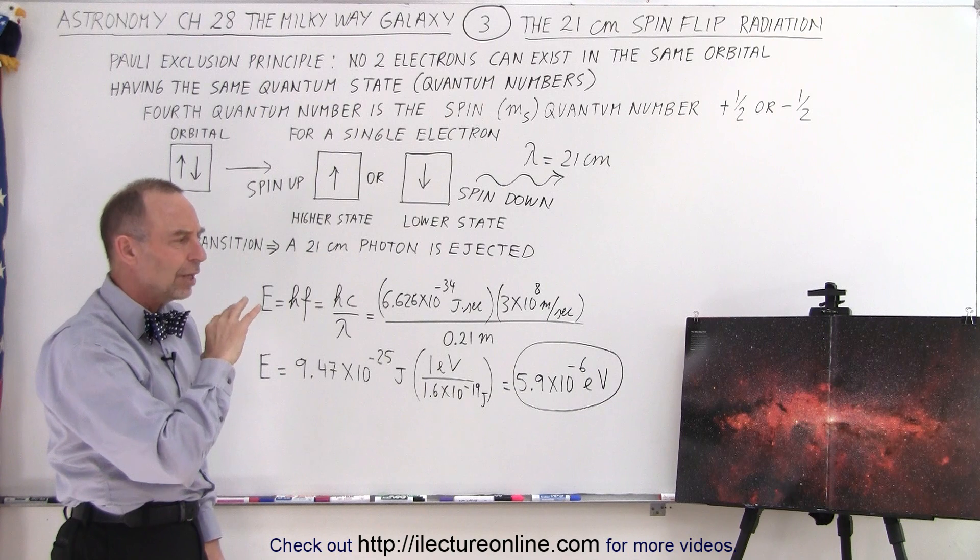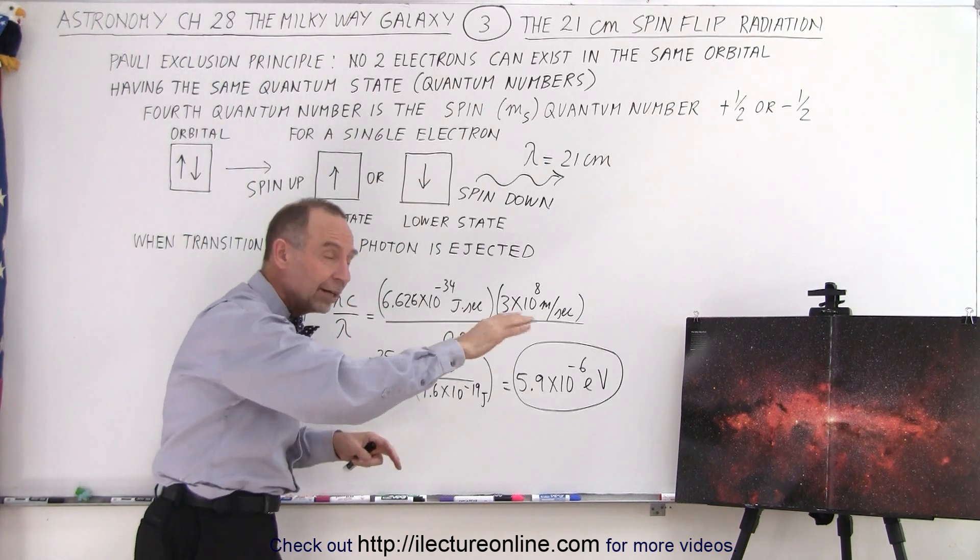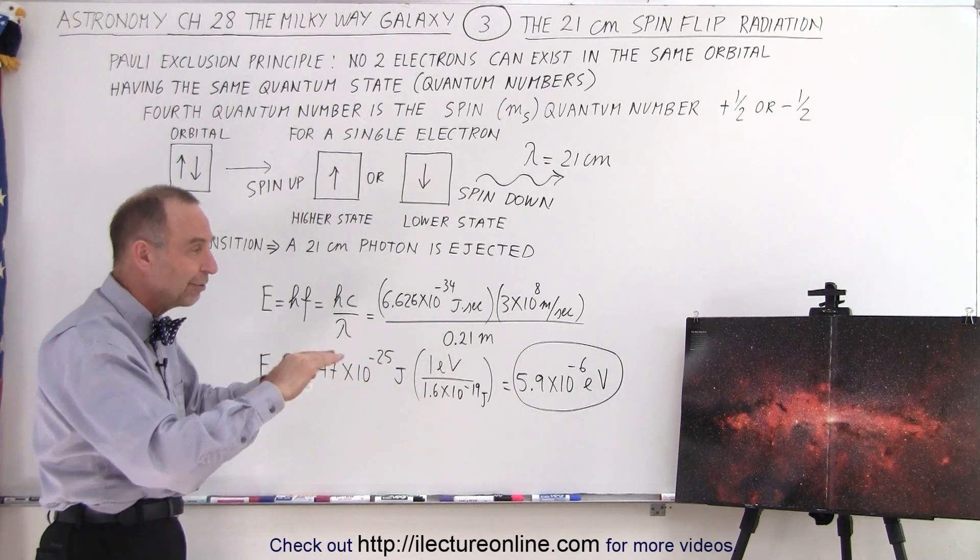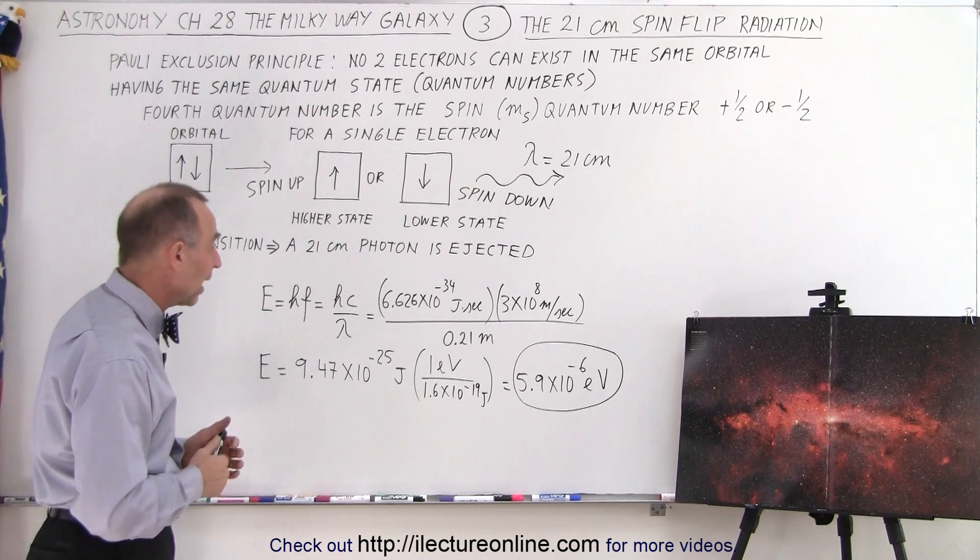So we can actually see that radiation coming towards us whenever those electrons do a spin flip. And so when they do that spin flip, we can recognize that, and then we can try to surmise what's on the other side, deep inside those dust lanes and nebulas. And that's how we try to figure out the structure of our galaxy. At least it's one of the ways in which we can do that.